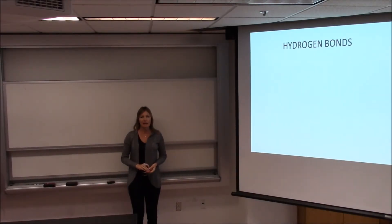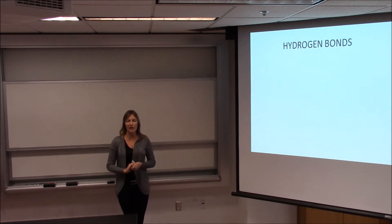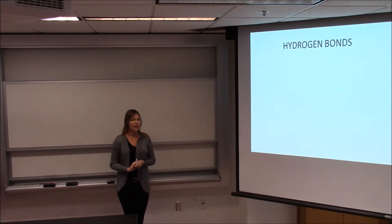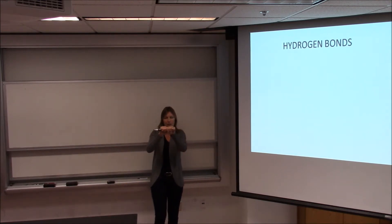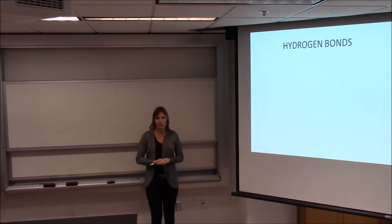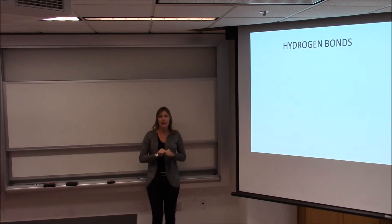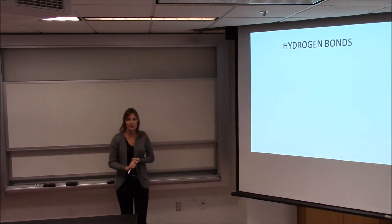Hydrogen bonds are the third category of bond we need to talk about. We've talked about covalent bonds, both polar and nonpolar. Covalent bonds are by far the strongest bonds — they involve sharing electrons. And then ionic bonds are this association between ions of opposite charge, not as strong as covalent bonds. In order to understand hydrogen bonds, you need to recall what a polar covalent bond is, so we're going to talk about that to start, and that's going to set the stage for hydrogen bonding.